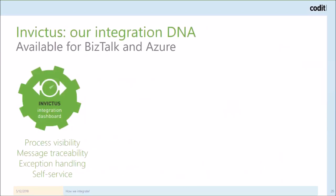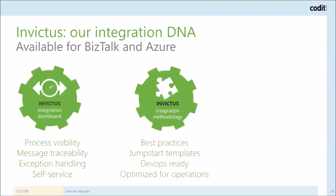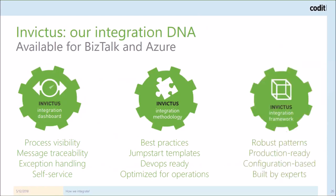At Coda we aimed to achieve this, and it was also thanks to Invictus, our integration suite, which really reflects our methodology. The Invictus suite is available both for BizTalk Server and Azure Integration Services. It comes with a dashboard that provides visibility into your message exchanges, along with our integration methodology including best practices and jumpstart templates that are ready to be automatically deployed. We've also optimized it for operations with end-to-end correlation and good monitoring. It comes with a framework implementing integration patterns like double-checker and sequence controlling — all configuration-based, built by experts, and available in both BizTalk and Azure Integration Services.